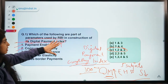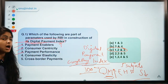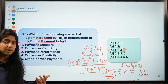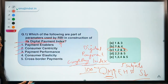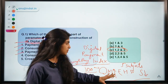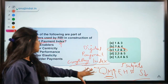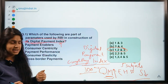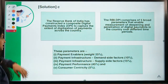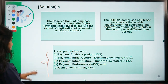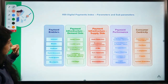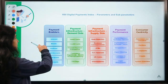Now RBI wants to look at the penetration of digital payments in India — how many people are using their phones or digital means to make payments. For that they need certain parameters, just as for constructing an overall percentage you take into account different subjects. RBI looks at different parameters, and there are 5 parameters which have been used by RBI. Let's look at this in a diagram as that is going to be easier to comprehend.